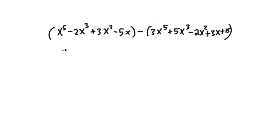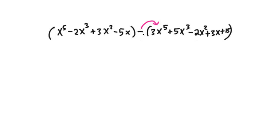We have two polynomials here: x to the fifth minus 2x cubed plus 3x squared minus 5x, and 3x to the fifth plus 5x cubed minus 2x squared plus 3x plus 15. We are going to subtract this second polynomial from the first one. The first thing we want to do is distribute this negative sign into each of the terms inside the second set of parentheses.